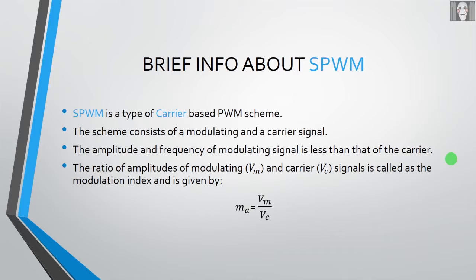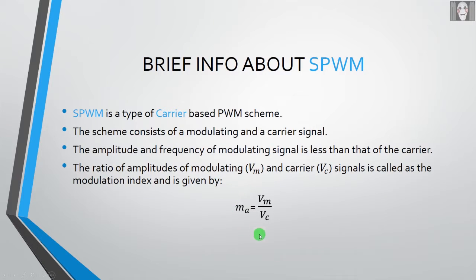SPWM is a type of carrier-based PWM scheme. The scheme consists of a modulating signal and a carrier signal. The amplitude and frequency of the modulating signal is less than that of the carrier. The ratio of amplitudes of the modulating and carrier signals is called the modulation index, given by ma = Vm / Vc.